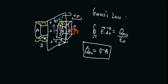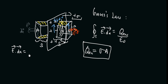For the side surfaces of the pillbox, the electric field and the area vector dA are perpendicular to each other, so their dot product will be zero. For the two cross-sectional surfaces, the electric field and the dA vector point in the same direction, so their dot product will be the magnitude of the electric field.